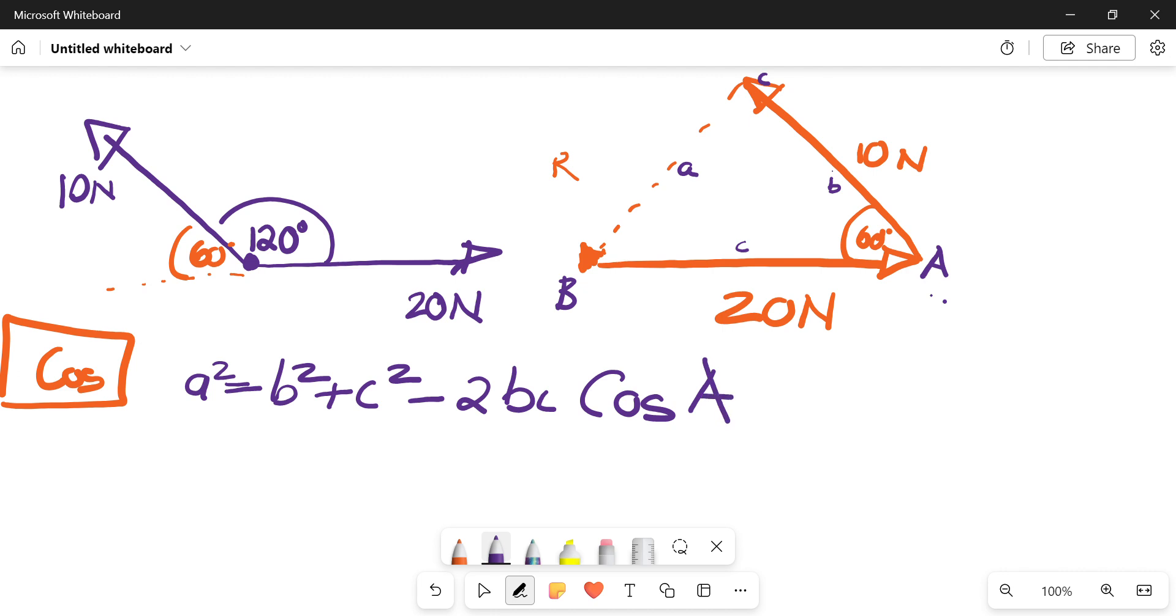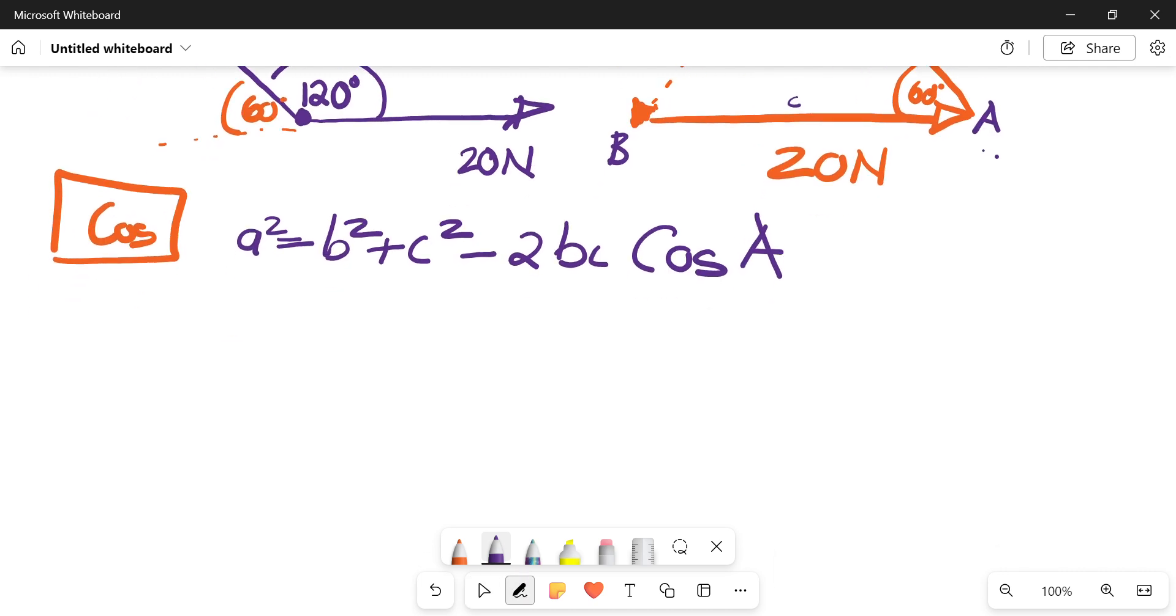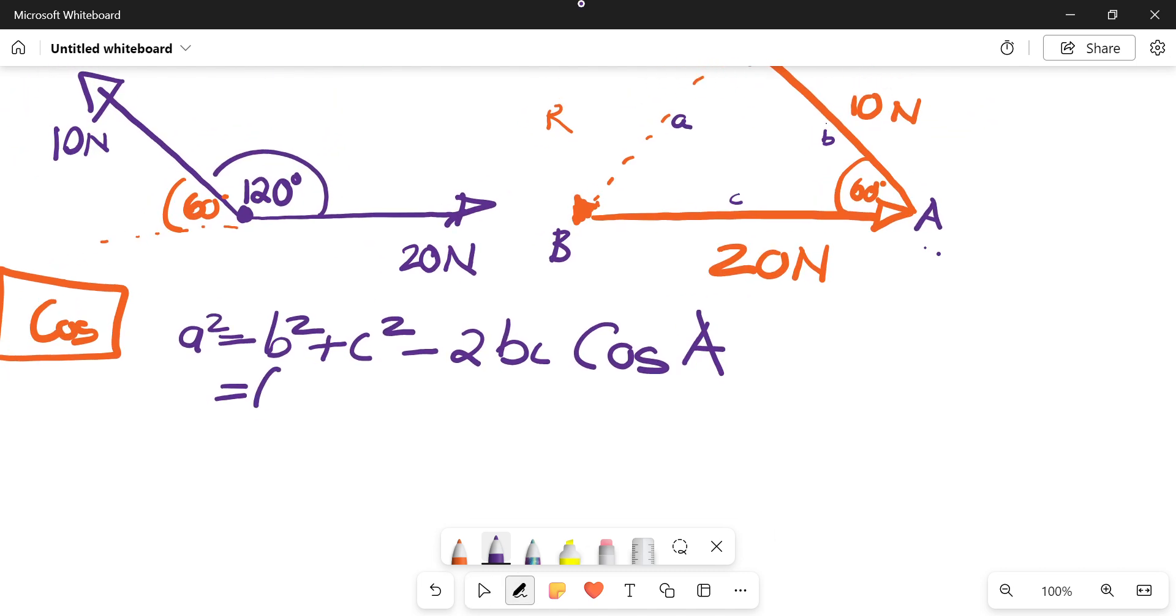It says a squared is equals to b squared plus c squared minus 2bc cos of A. I want you to dream about this tonight. And already by looking at that formula it tells us that we are actually solving for the magnitude of a.